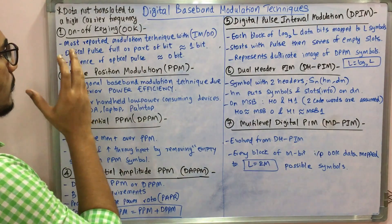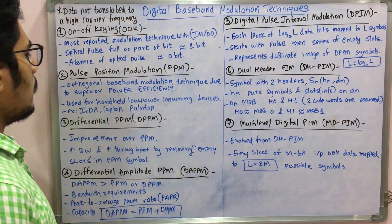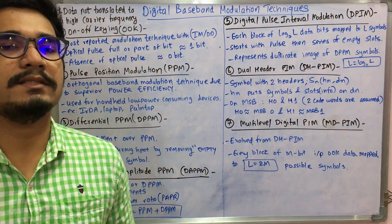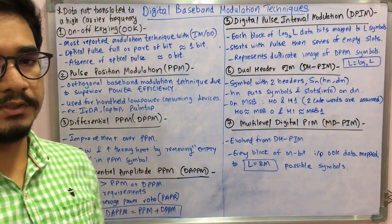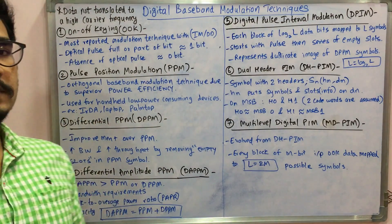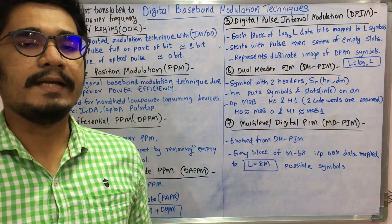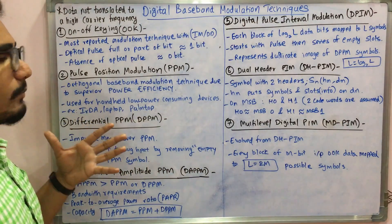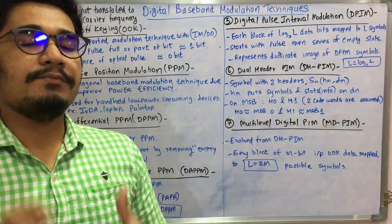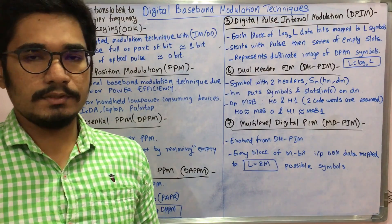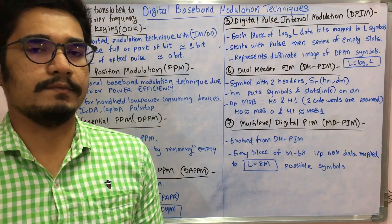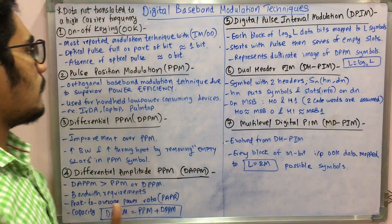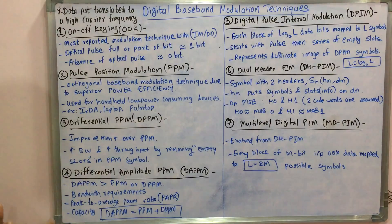The second technique is Pulse Position Modulation (PPM). This is an orthogonal baseband modulation technique known for its superior power efficiency. Unlike other techniques, it has a specialized feature regarding power efficiency, and being orthogonal means it is independent of other signals and works at right angles. It is used for handheld, low-power-consuming devices like IRDA laptops and palmtops. IRDA — Infrared Data Association — is used for transmitting high-frequency signals, and is equipped with specialized ports on devices like printers and scanners.